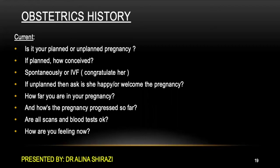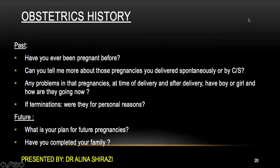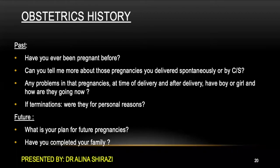This is the general template of obstetric history to ask from all obstetric patients. In past history, ask: 'Have you ever been pregnant before? Can you tell me more about those pregnancies? How did you deliver — vaginally or by caesarean section? Did you have any problems during or after delivery? Do you have a boy or a girl, and how are they doing?' If there were terminations, ask: 'Were they for personal reasons? What is your plan for future pregnancy? Have you completed your family?'